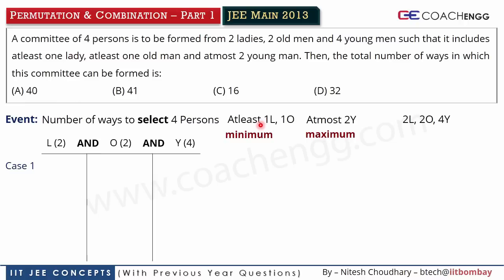You can build cases according to at least — one L and two L — and also cases according to O: one O and two O. But I will build cases here according to at most, because at most gives us: maximum two Y. This means I can select zero Y, or minimum one Y, or two Y.